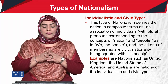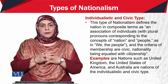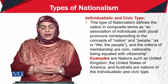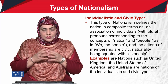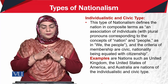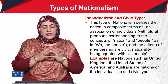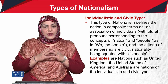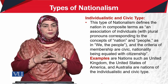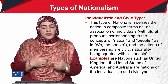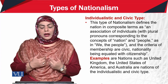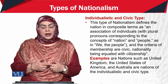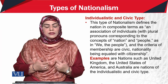The first type is individualistic and civic nationalism. This type of nationalism defines the nation in composite terms as an association of individuals. That association of individuals basically deals with the concept of nation and people, as in 'we the people,' and the criteria of membership are civic — nationality being equated with citizenship.